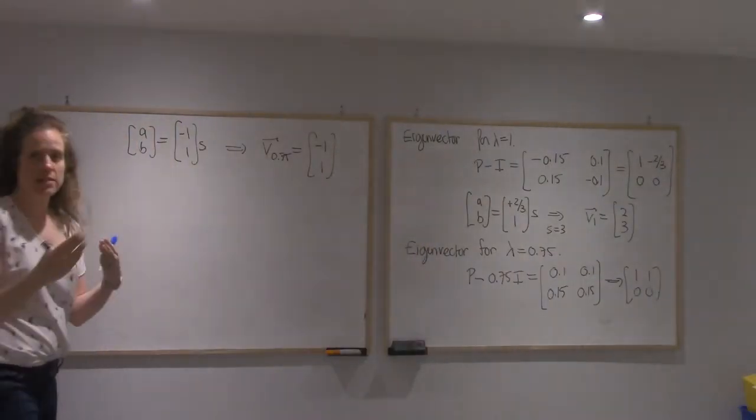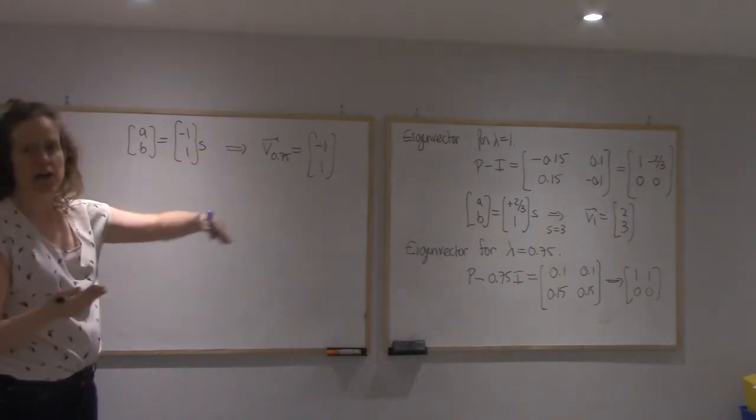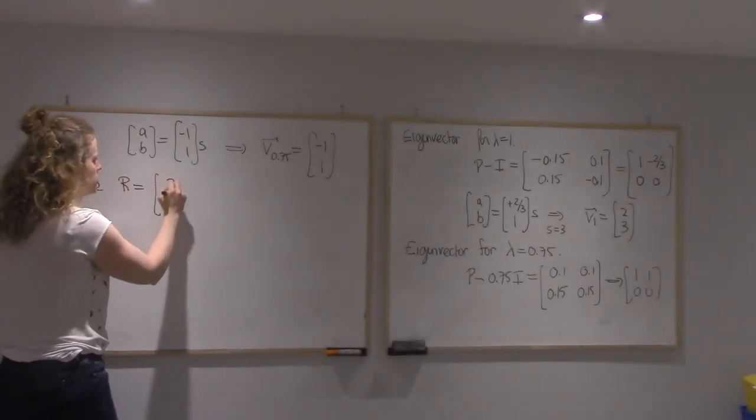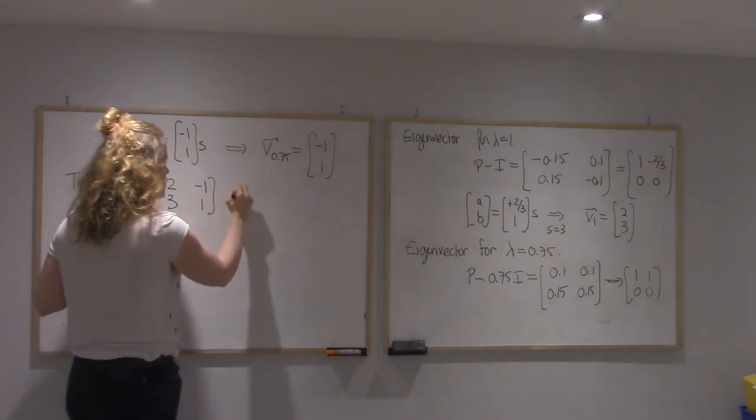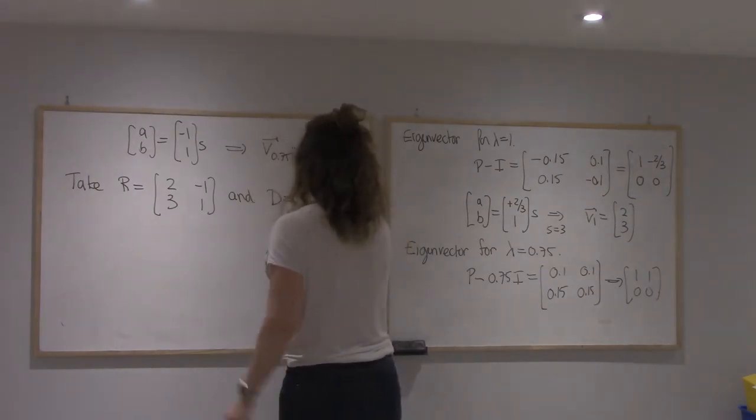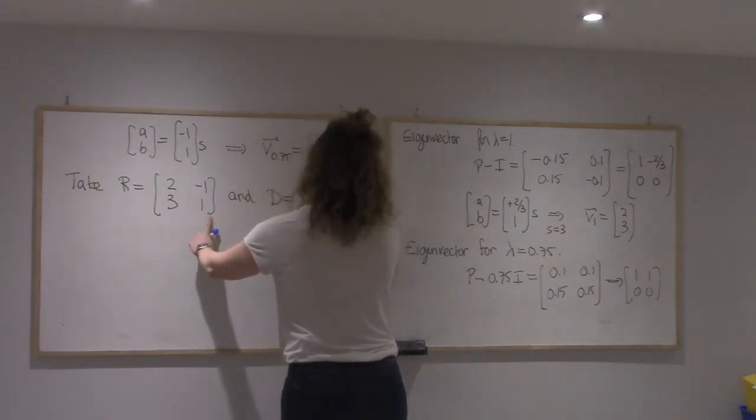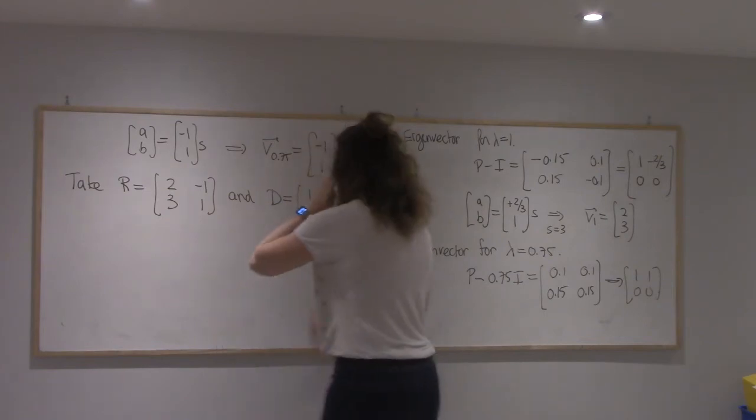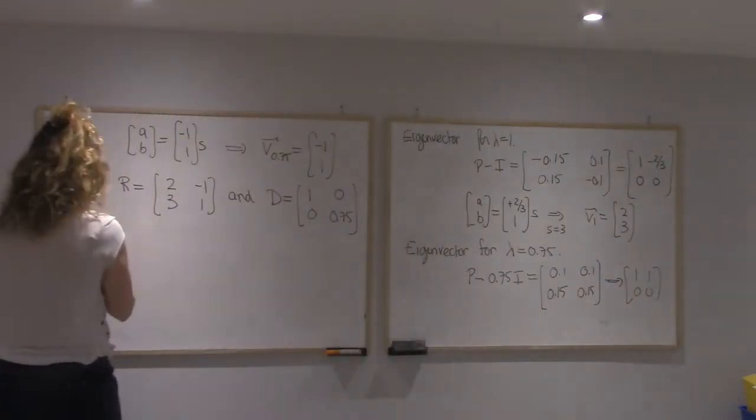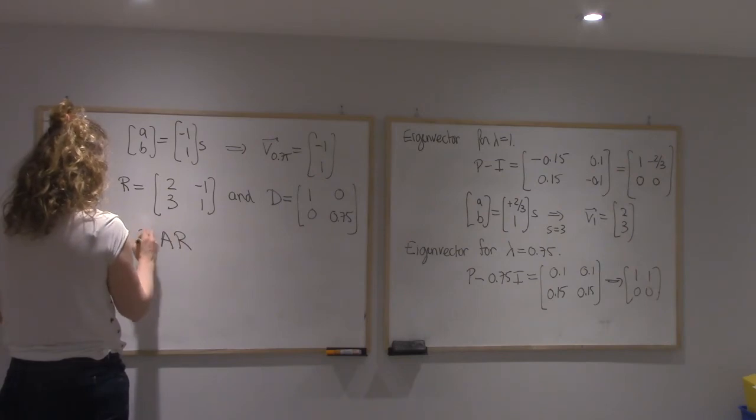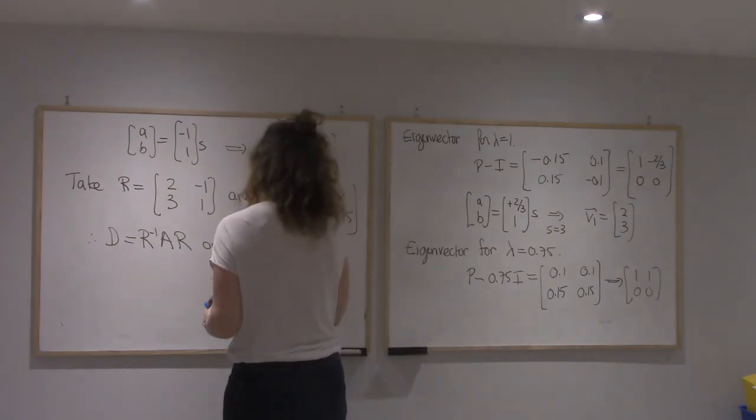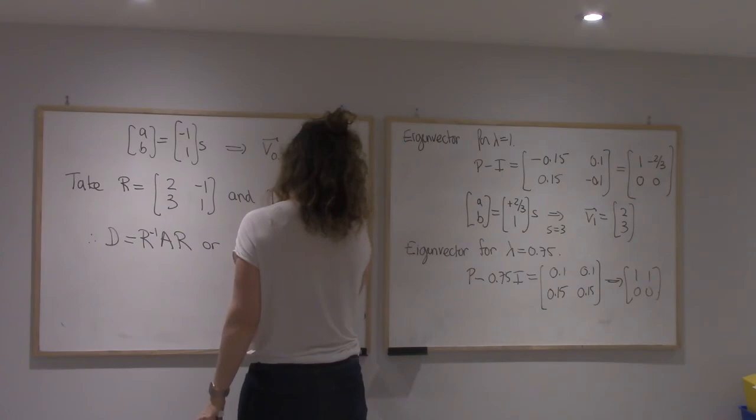So my change of basis matrix that diagonalizes, I'm going to call R. So I'm going to take R to be 2, 3, 1, minus 1. And I'll have D, which is the two eigenvalues. So this vector has 1, this vector is 0.75, so 1, 0, 0, 0.75. So what we get is that R A R^(-1) is D or A is R D R^(-1).